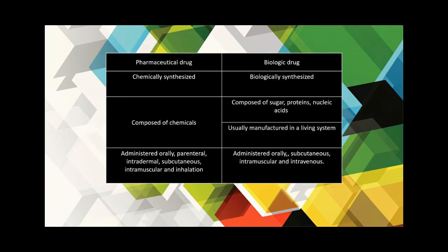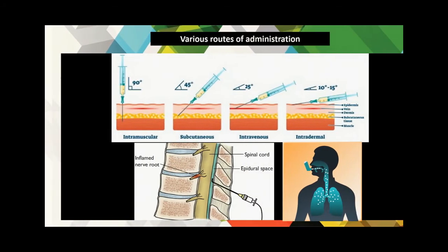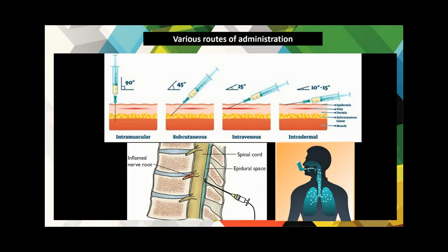Let's understand the various routes of administration: oral, parenteral (which includes subcutaneous, intramuscular, intravenous), epidural, and inhalation. The oral route includes tablets, capsules, powders, emulsions, and gels. Most of these are absorbed from the small intestine, and some from the stomach and colon. Drugs administered from this route have slow but more prolonged action, and are the safest, most economical, and convenient.